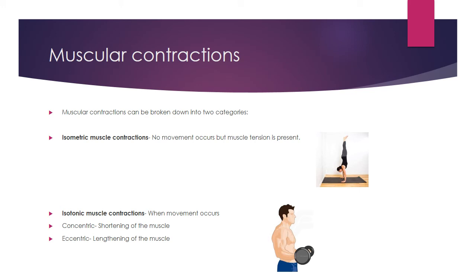We need to be careful about which part of the movement we're talking about. Looking at the bicep curl: on the upward phase, the biceps will be shortening, so they are doing the concentric movement, while the triceps will be lengthening on the upward phase, so the triceps are doing the eccentric part of the movement.